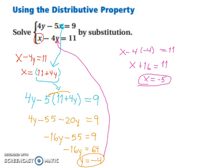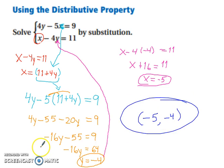All we have to do is write it together. So negative 5 comma negative 4. That is the coordinate that satisfies both equations.